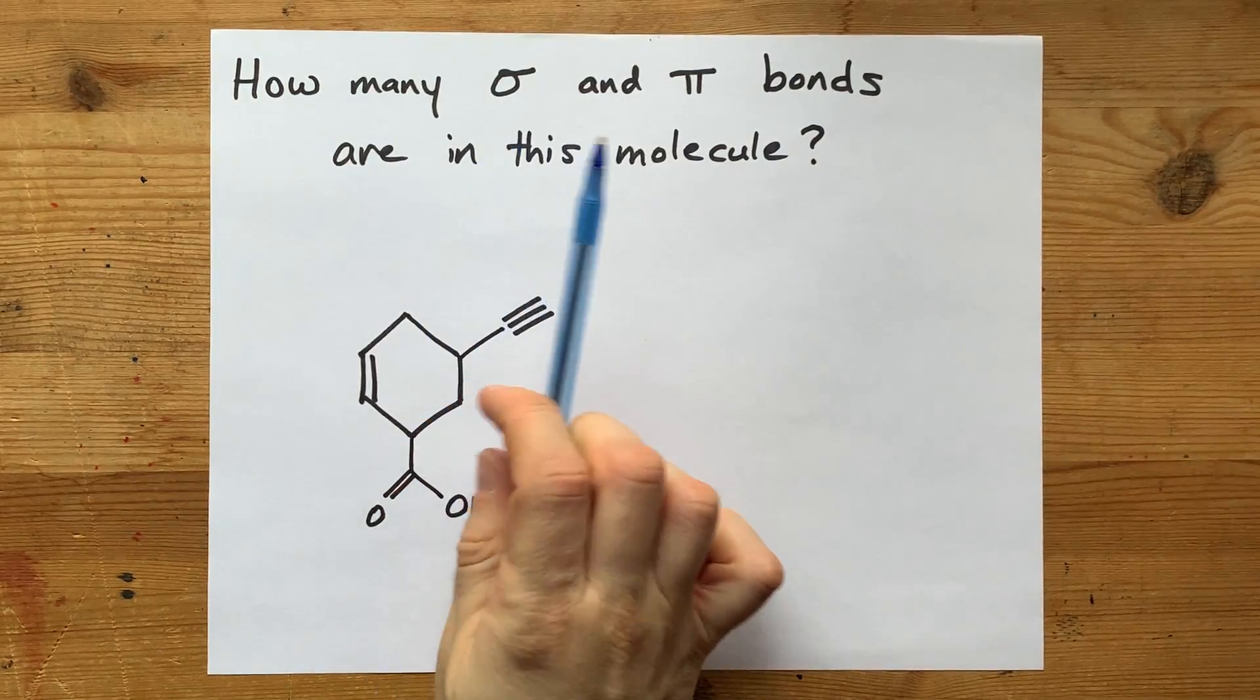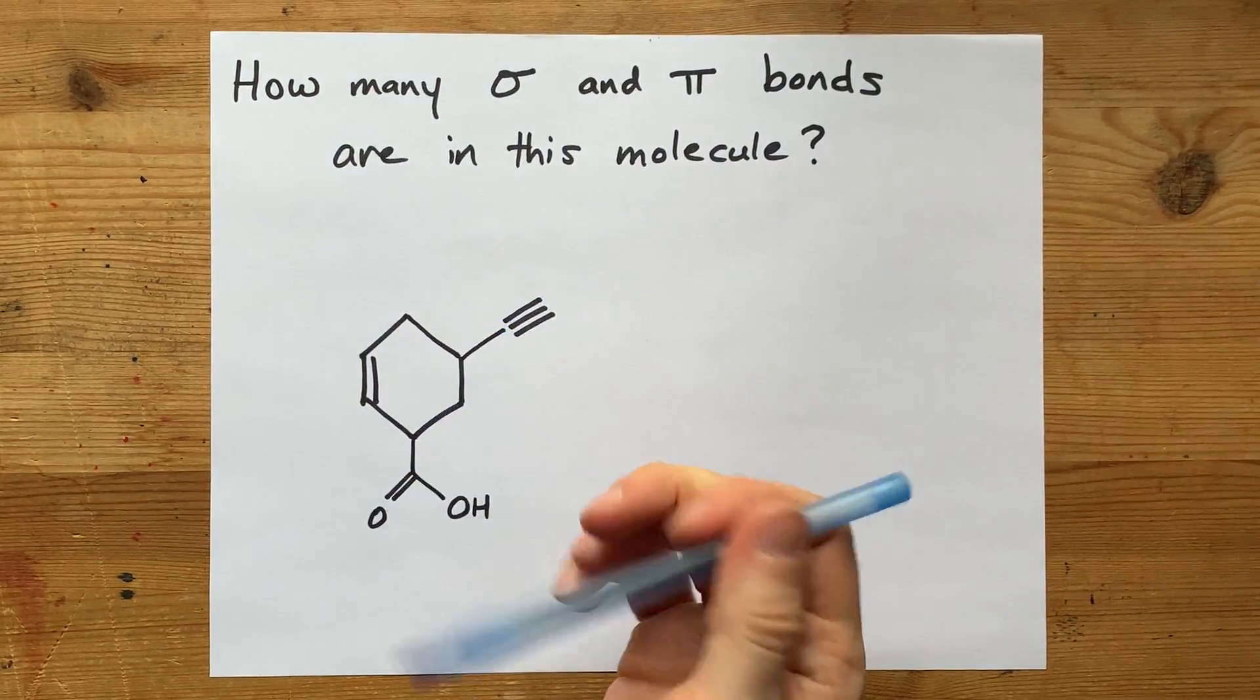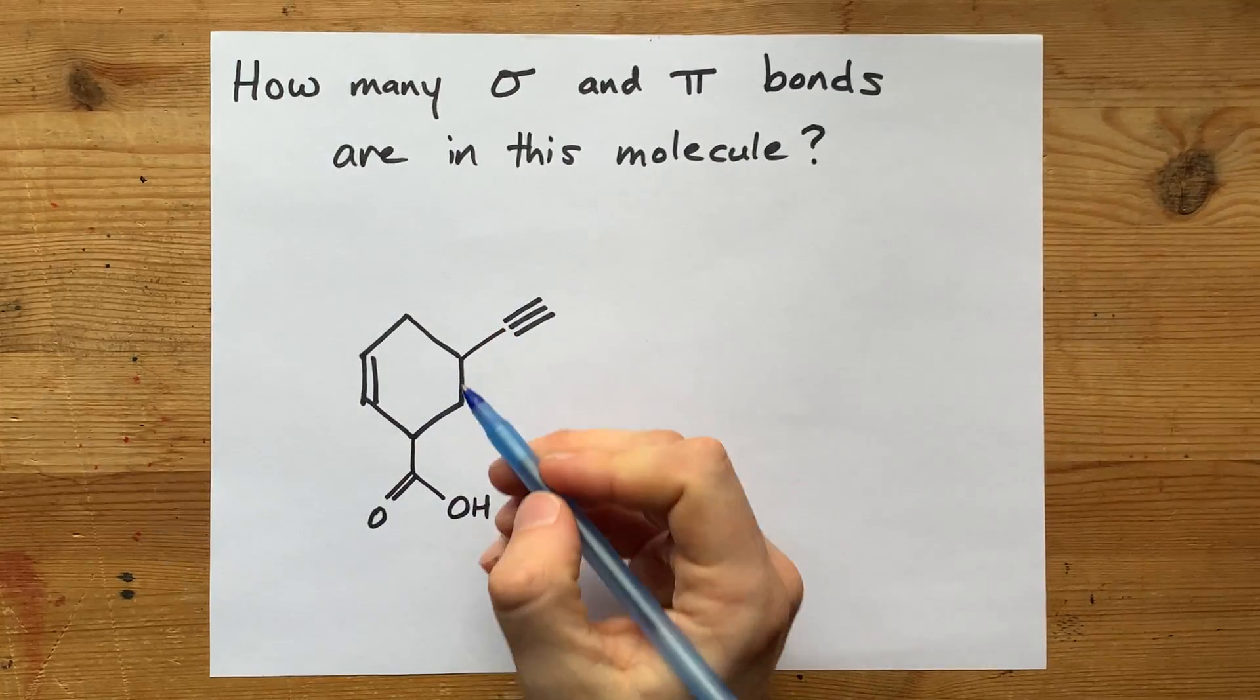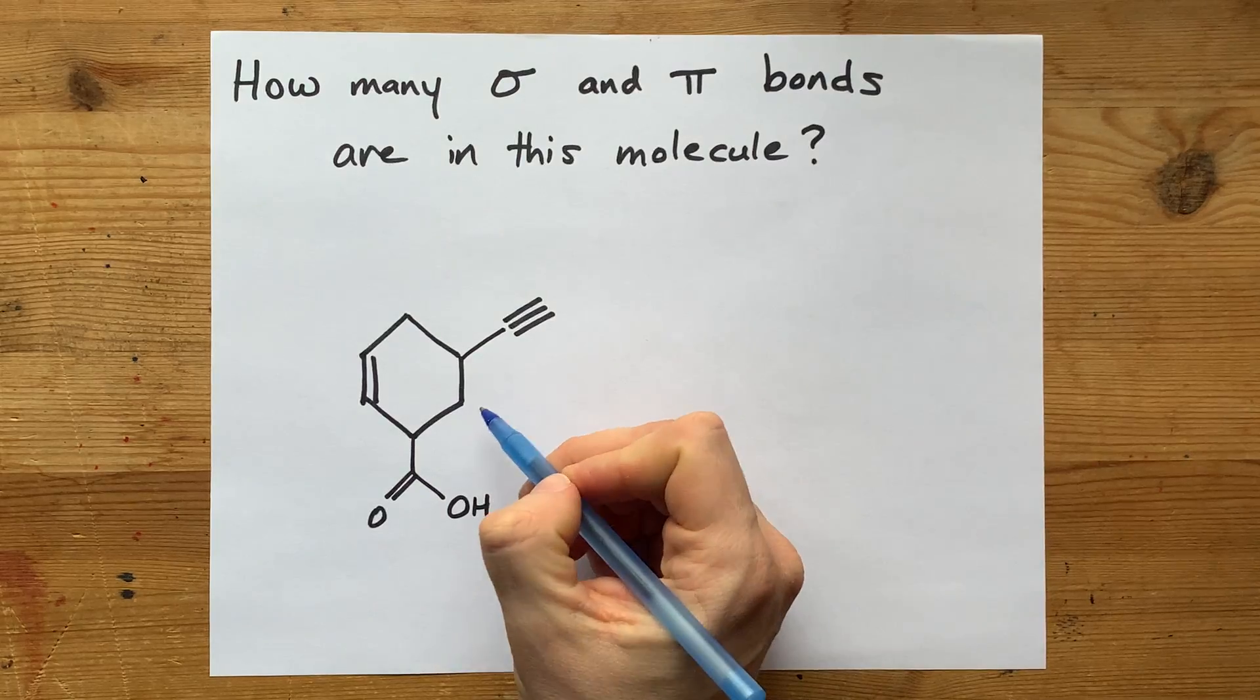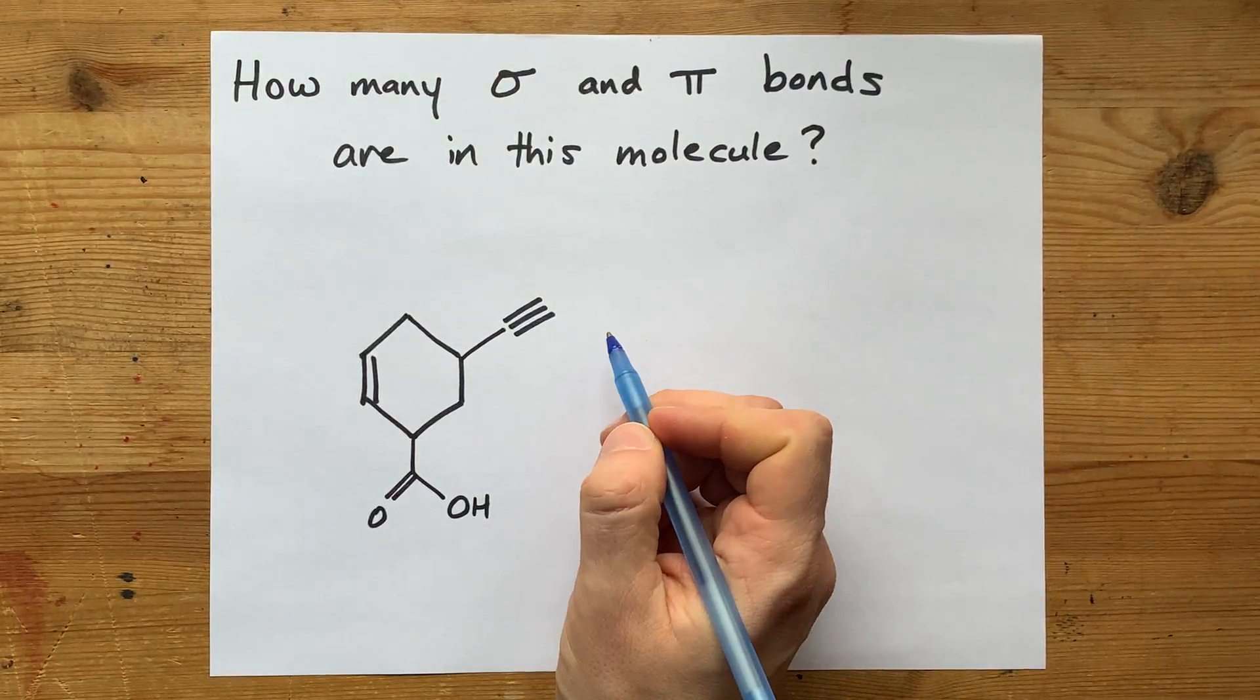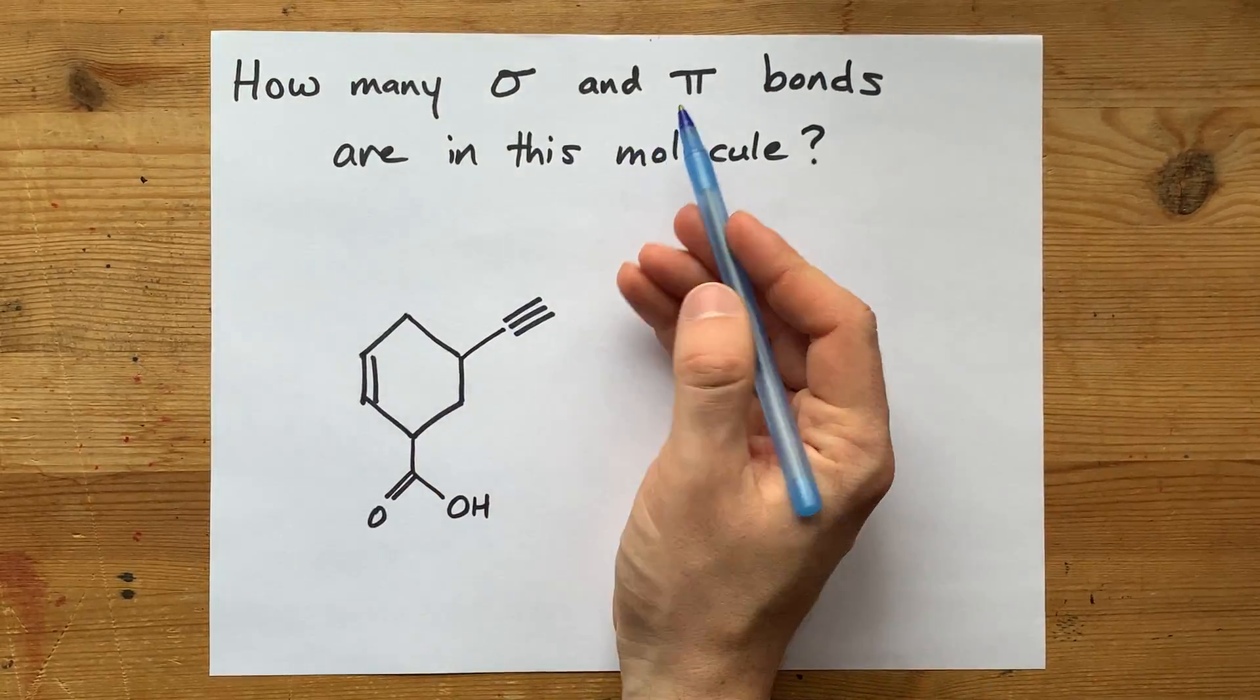Can we count the number of sigma and pi bonds in a molecule? Well, yes. The first bond between any two atoms is always sigma, and then if there are second or third bonds between those two atoms, each of those counts as pi.